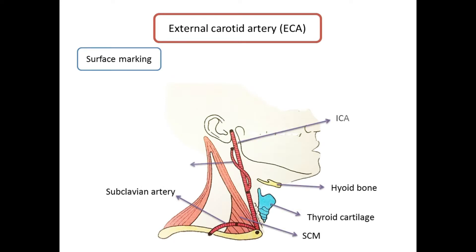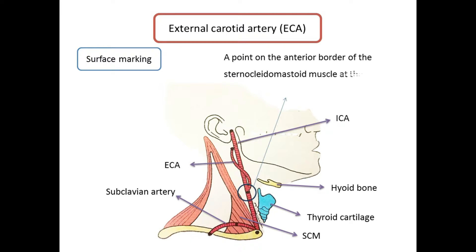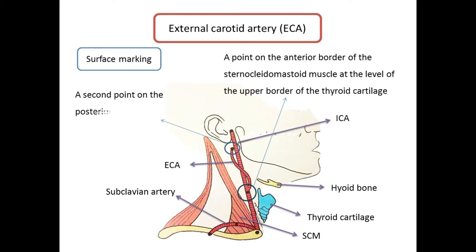The external carotid artery is marked by joining the following two points: a point on the anterior border of the sternocleidomastoid muscle at the level of the upper border of the thyroid cartilage, and a second point on the posterior border of the neck of the mandible. The artery is slightly convex forwards in its lower half and slightly concave forwards in its upper half.